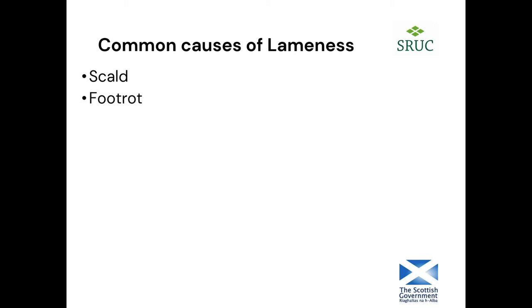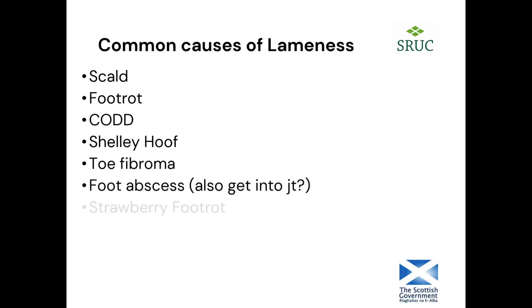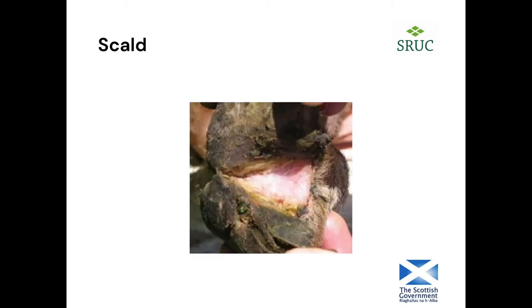Common causes of lameness include scald, foot rot, CODD, shelly hoof, toe fibromas, foot abscesses, and strawberry foot rot. Scald is when the area between the toes is moist, red, and painful — it's a precursor to foot rot and can arise after wet conditions, especially if rough plants like thistles are scratching the interdigital skin. If you can nip scald in the bud it's one of the easier things to fix, before it turns into foot rot which is much harder to treat.